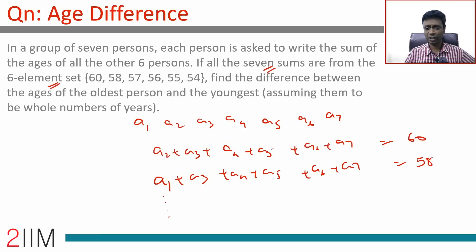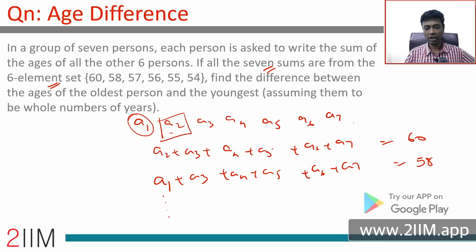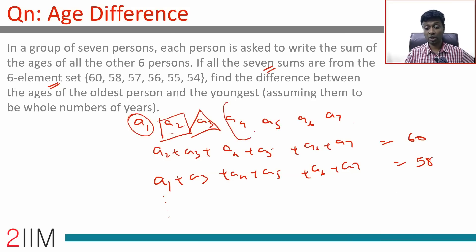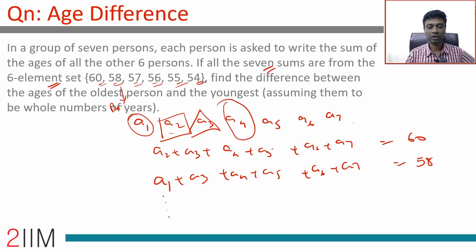Now, the seven sums come from a six-element set. There are seven sums because leaving out a1 gives six numbers to add, leaving out a2 gives six numbers, and so on — seven possible sums exist. But they're from a six-element set, which means one of these numbers repeats.